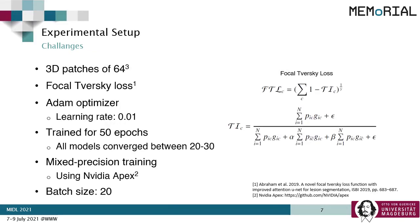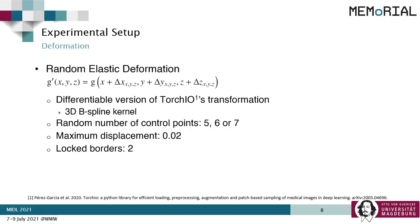We used a batch size of 64. The loss was calculated using a Focal Tversky loss and was optimized using the Adam optimizer with a learning rate of 0.01 for 50 epochs. Mixed precision training with a batch size of 20 was performed using NVIDIA Apex. For applying deformation, a differentiable version of TorchIO's random elastic deformation was created using 3D B-spline kernels with a random number of control points and maximum displacement of 0.02 with two locked borders.